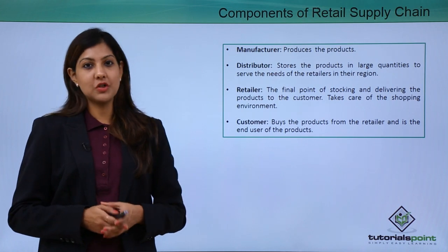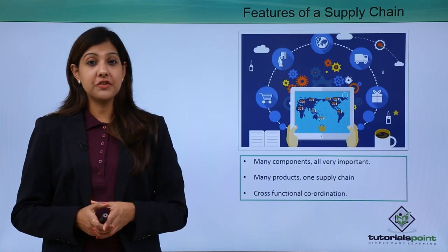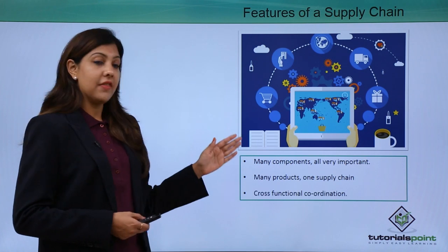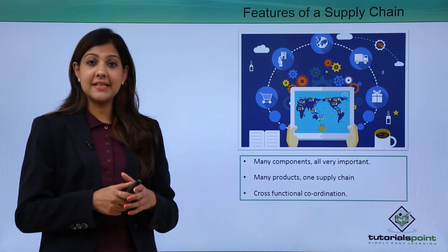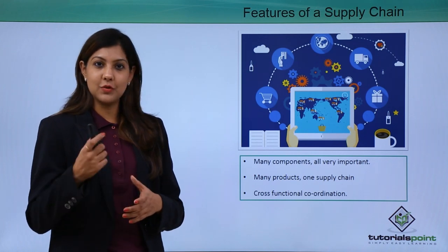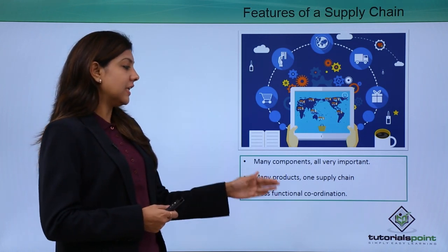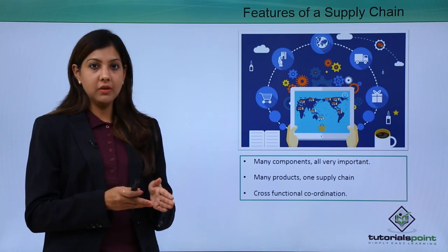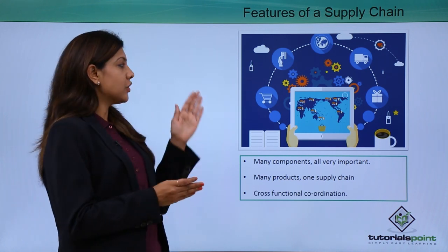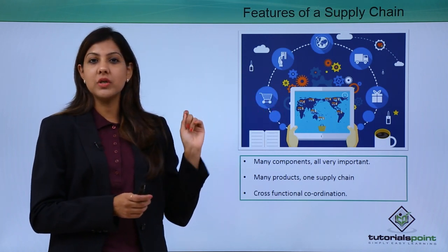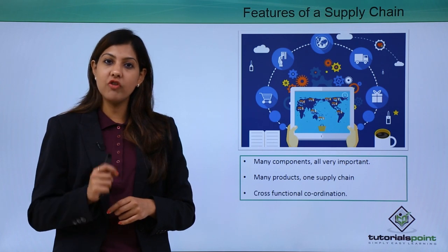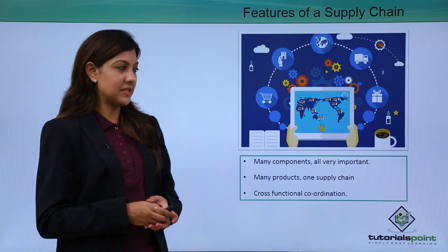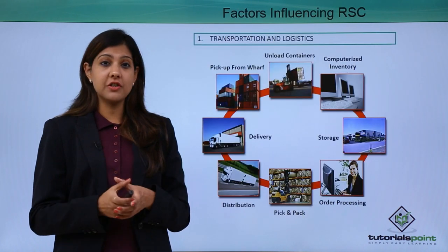There are many components to a supply chain, and all of them are very important. There are many products but only one supply chain, which links products, people, and processes to reach the consumer. Supply chains are cross-functional and require a lot of coordination between managers in terms of people, technologies, and processes. Supply chain management is a continuous process, and even one small weak link in the middle can be disastrous, resulting in customers not getting products on time.